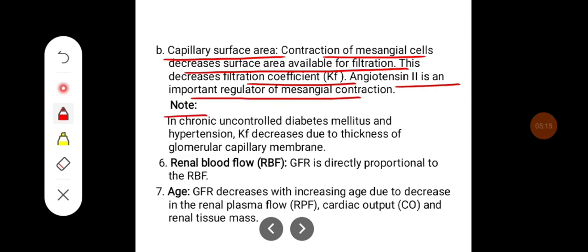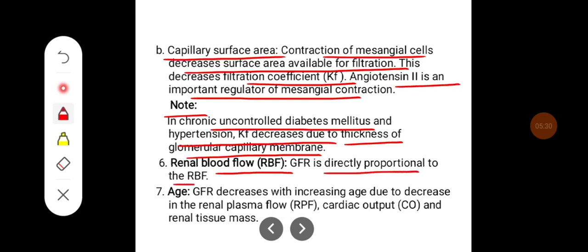In chronic uncontrolled diabetes mellitus and hypertension, the filtration fraction decreases due to thickening of the glomerular capillary membrane. GFR is also directly proportional to renal blood flow. GFR decreases with increasing age due to decreases in renal plasma flow, cardiac output, and renal tissue mass.